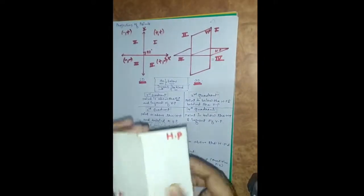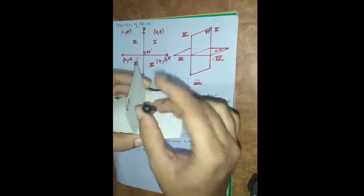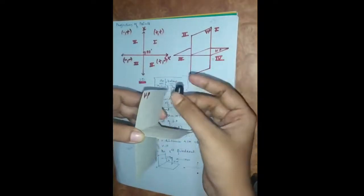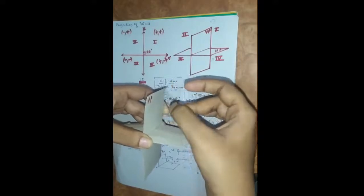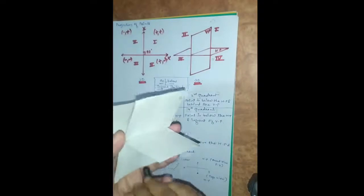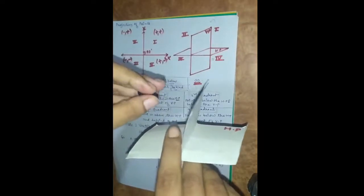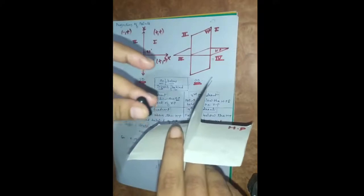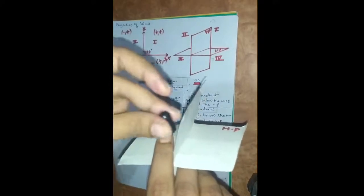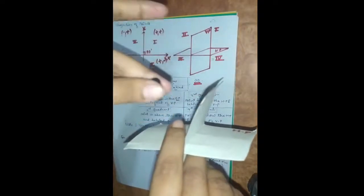If we consider a point in the first quadrant at some distance from the HP, we explain its position as: the point is above the HP and in front of the VP. Similarly, if the point is in the second quadrant, we explain its position as: the point is above the HP and behind the VP.